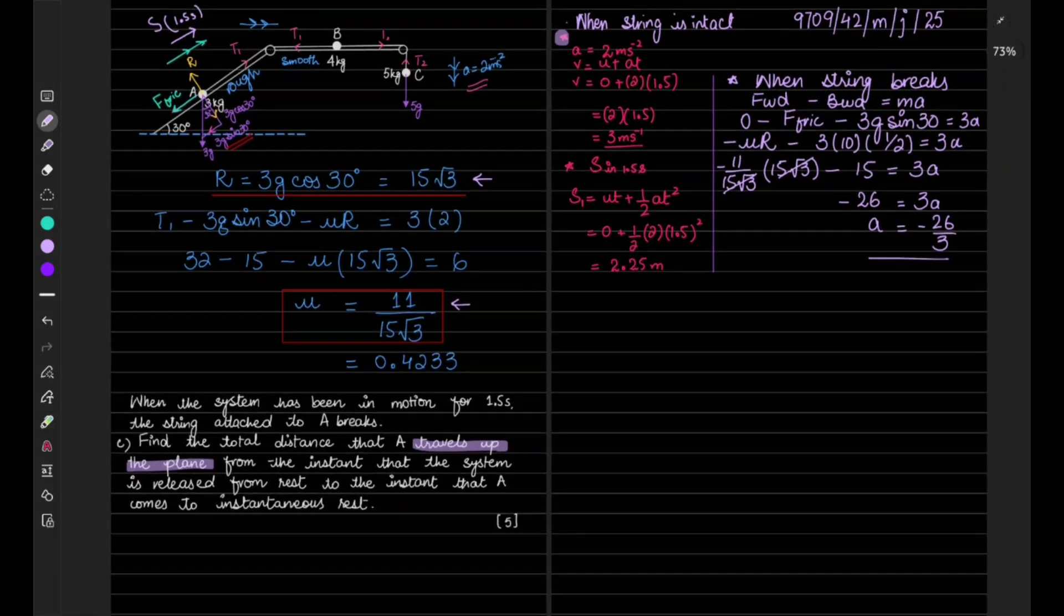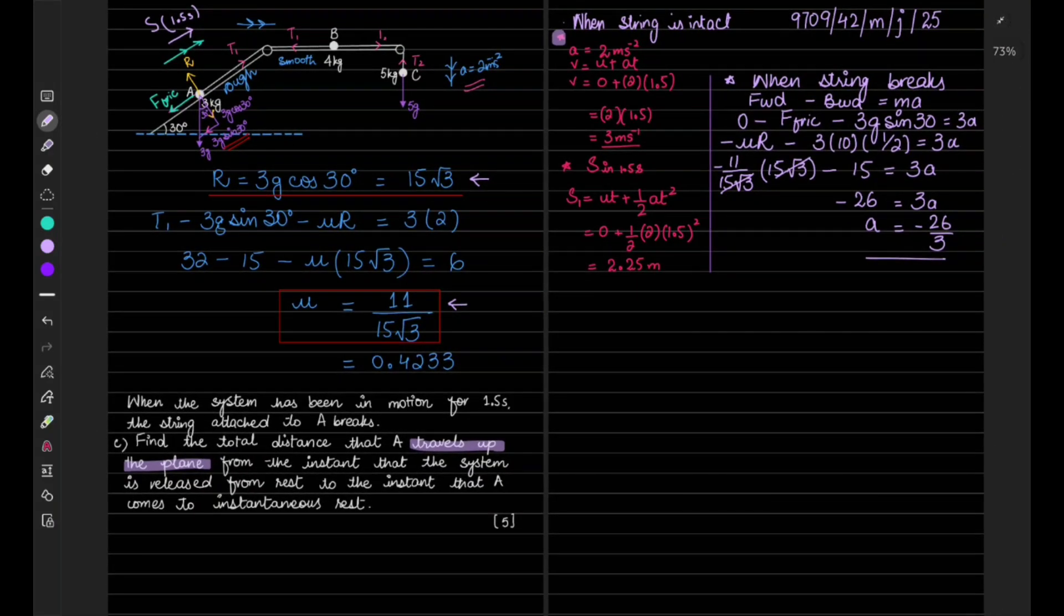Now when we found the acceleration with which it is moving, we should be finding the distance it has covered. For that, actually when the string breaks we don't have the time, so we should be using the other equation of motion that is not involving time. So we will be using v squared equals u squared plus 2as.